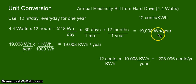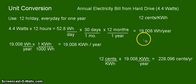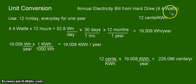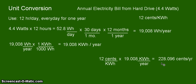Before you report your final answer — if this will be on an exam — you have to make sure that you always go back to the number of significant figures that you started with. Remember, we started with 4.4 watts. That's only two significant figures, and your answer is 228.096, which is six significant figures. So you have to do some rounding off, or transform this into scientific notation for your final answer, and that becomes 2.3 times 10 to the power of positive 2. So that means 2.3 times 10 to the power of positive 2 as your final answer, and that will be your annual electricity bill from your hard drive.